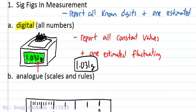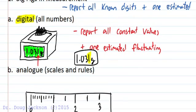Sometimes air currents will cause that last digit — that least accurate thousandths place or milligram place digit — to fluctuate around. You just have to say it's kind of halfway between a number and then make a guess. If it's constant, we report 1.031 grams; if it's fluctuating, that last digit may have to be estimated. Digital instruments are pretty easy to record in lab.